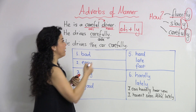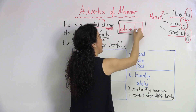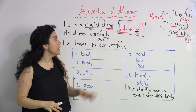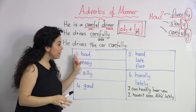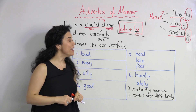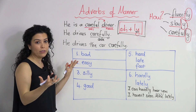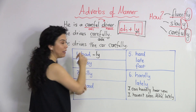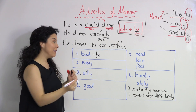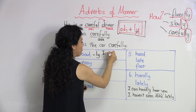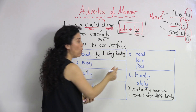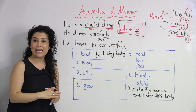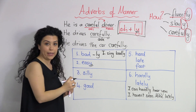The general rule is to add -ly right after the adjective, but there are different cases in forming adverbs of manner. Let's look at a chart together. Number one is the general rule: 'bad' becomes 'badly.' For example: 'I sing badly.' Another example: 'easy' ends with a -y.